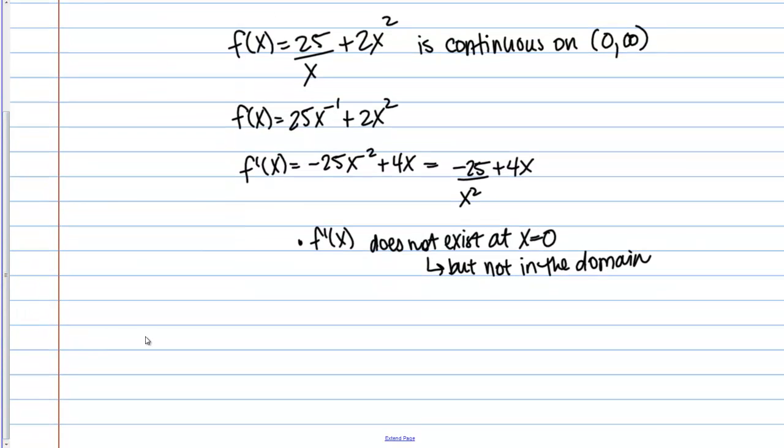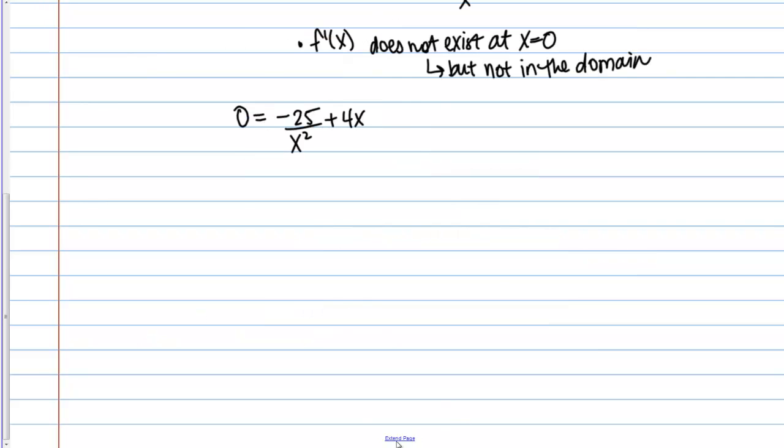But now let's think about places where it might equal 0. So 0 equals, I want to solve this equation, -25/x² + 4x. So there are several ways you could go about solving this. I'm going to find a common denominator on the right hand side and make that all one fraction. So to do that then I want to rewrite this second term so that it has a denominator of x². And to do that I just multiply top and bottom by x².